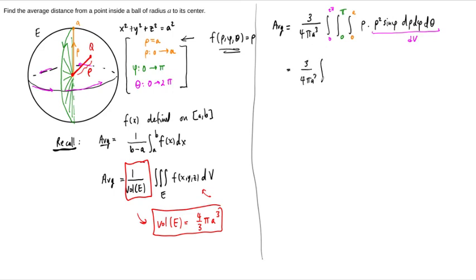And what we end up with is 3 over 4 pi, a cubed. The integral in the theta direction, 0 to 2 pi, 1 d theta. The integral in the phi direction is 0 to pi, sine of phi, d phi. And the integral in the rho direction is 0 to a, rho cubed, d rho. And each one of these integrals can be done individually now.